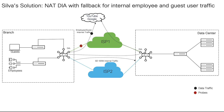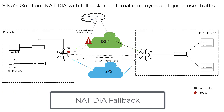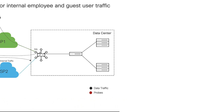In the event of a local breakout circuit failure or DIA tracker failure, the data traffic starts to flow through the SD-WAN overlay tunnels via the data center site to access the internet, thereby providing a failover. This feature is called Cisco SD-WAN NAT DIA fallback.